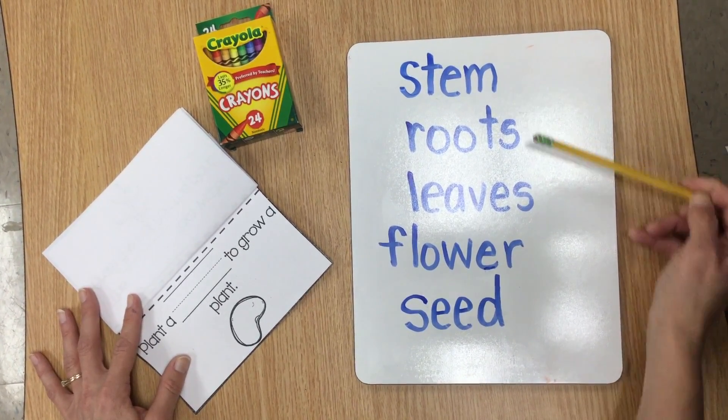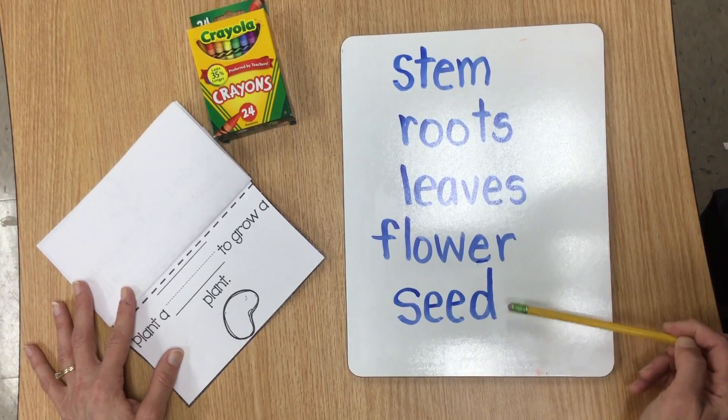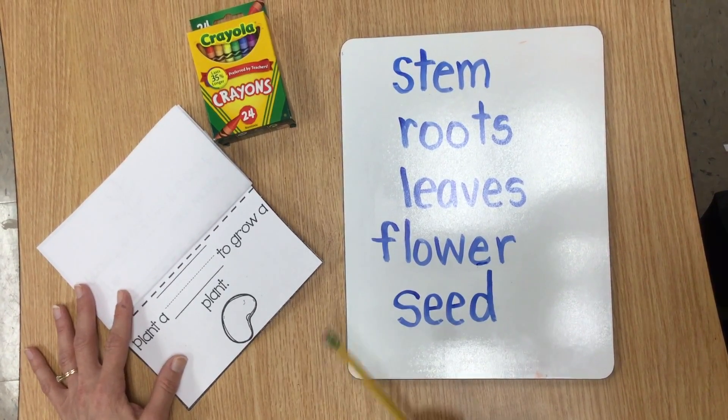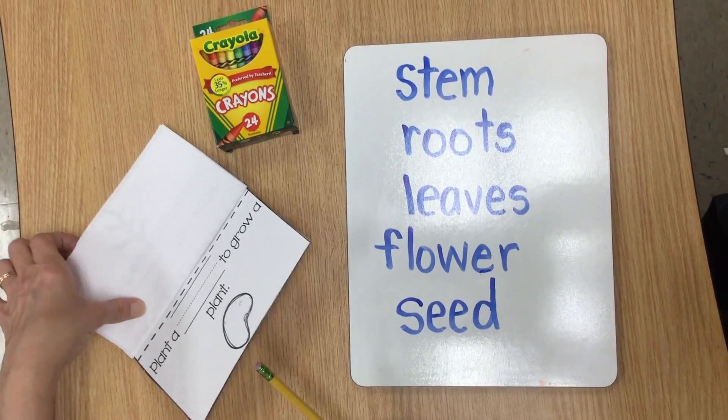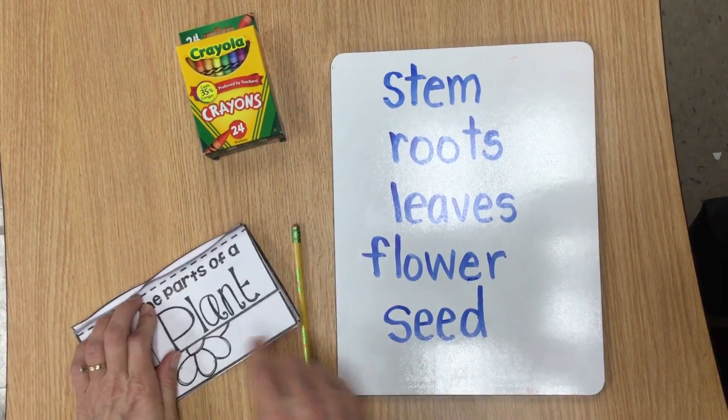Okay, let's see what our vocabulary words are again. We have stem, roots, leaves, flower, and seed. Go ahead and pick the vocabulary word that would go in there and finish coloring and then go back and read your booklet. Great job boys and girls.